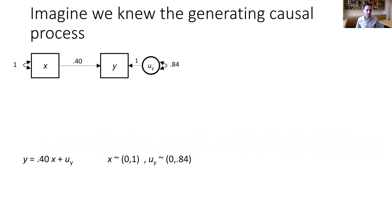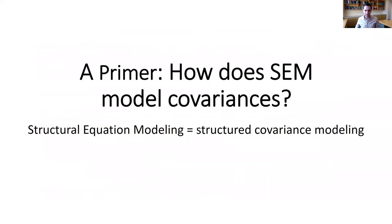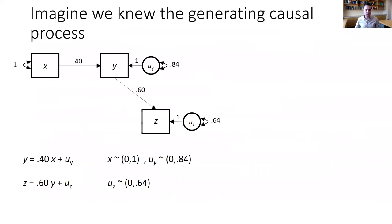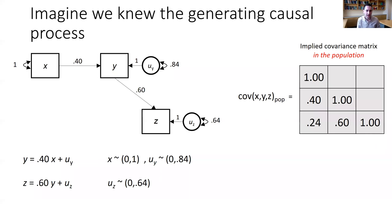A more intuitive name than structural equation modeling would perhaps be structured covariance modeling, because the entire purpose of the method is to structure an observed covariance matrix in a way implied by a model. Imagine we knew the generating causal process: perhaps x caused y with an effect size of 0.4, and y caused z with an effect size of 0.6. With variables scaled to unit variances, we would know exactly what covariance to expect: covariance between x and y of 0.4, between y and z of 0.6, and between x and z of 0.24 by way of the pathway through y.